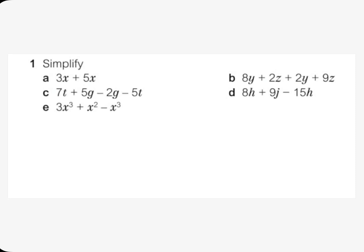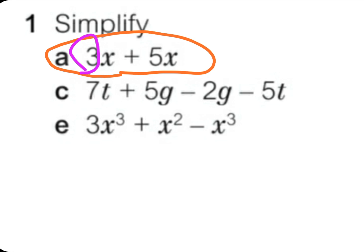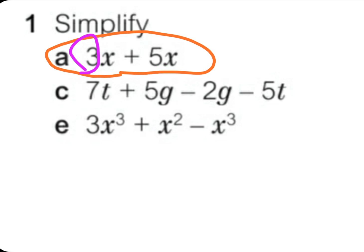Hello boys and girls, welcome to this presentation. We're going to talk about unit 2.1, simplifying, question 1. In this question, let's start with question A: 3x plus 5x. Here we have two numbers — three and five — and a variable which is X. When the variables are the same, the rule says that you add the numbers.